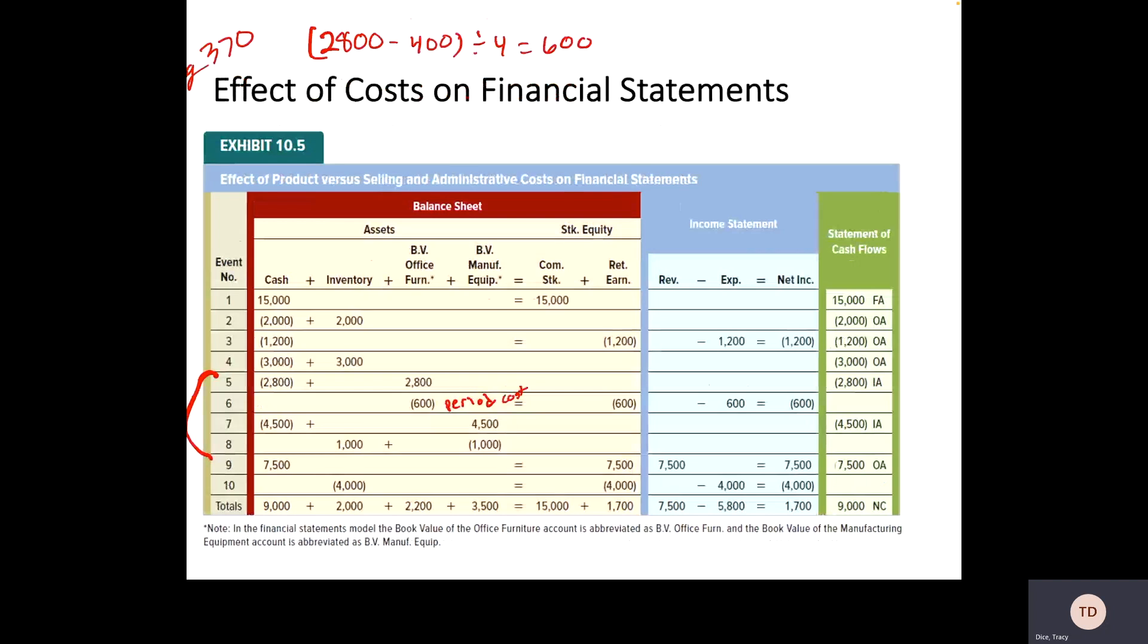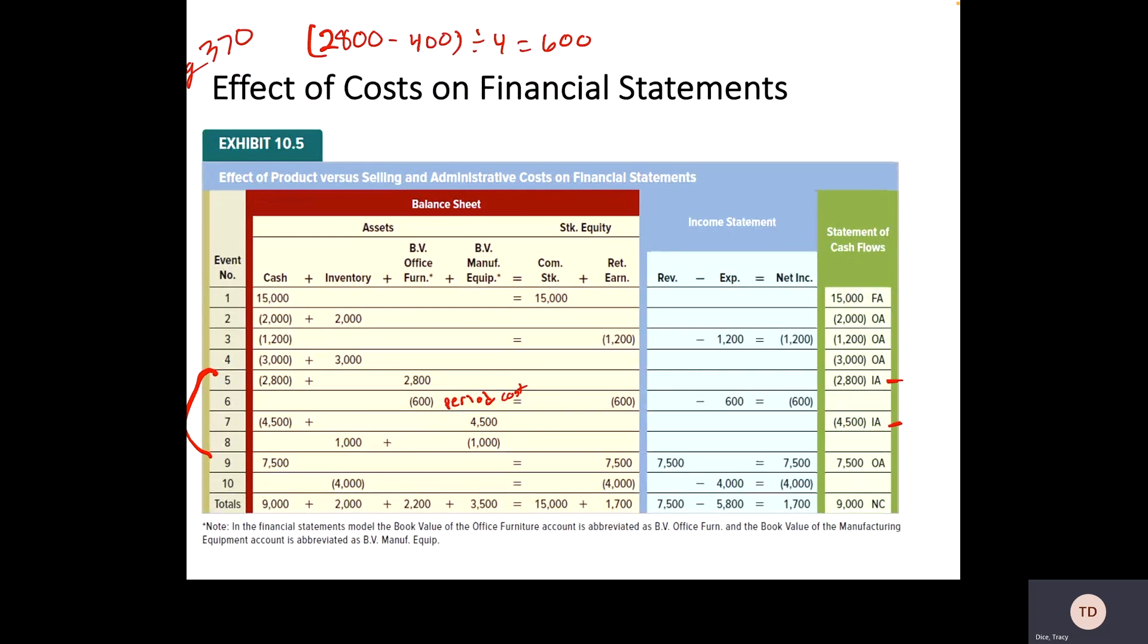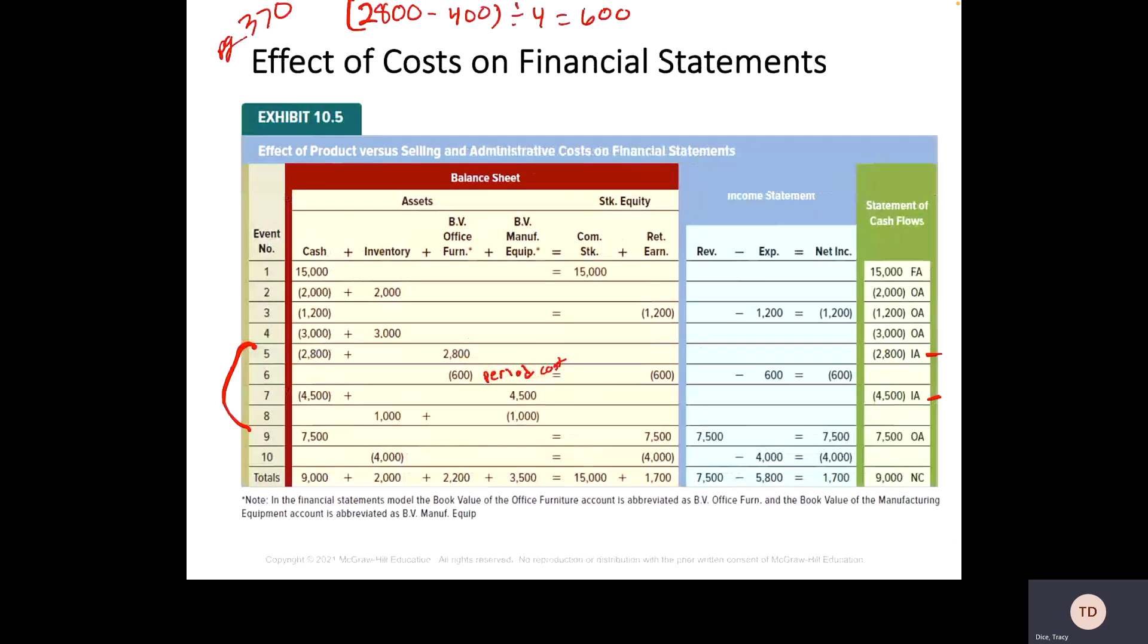Event 7, we're buying manufacturing equipment. And notice that both of these two events are investing activities because there's specific capital for the company. We're investing in the company. When we depreciate that manufacturing equipment, we take our original price, salvage value is $1,500, and then the useful life is three years, which gives us that $1,000.